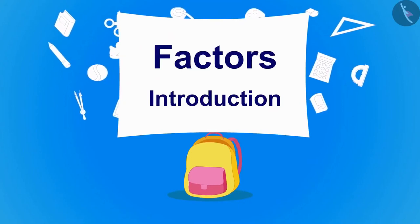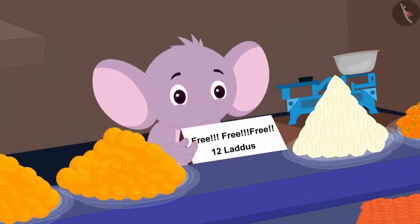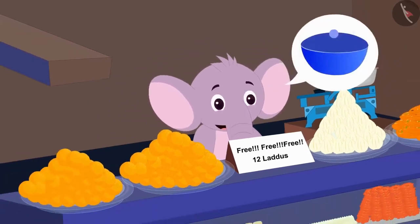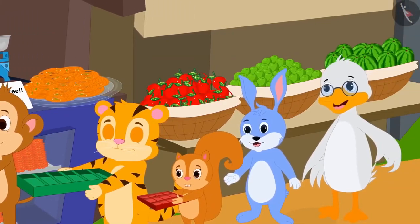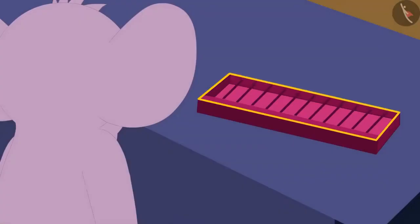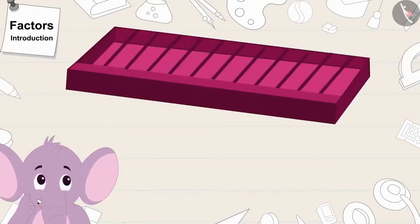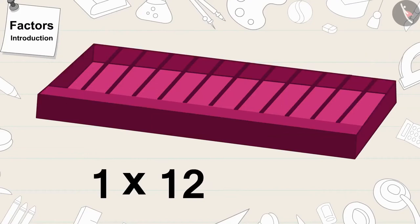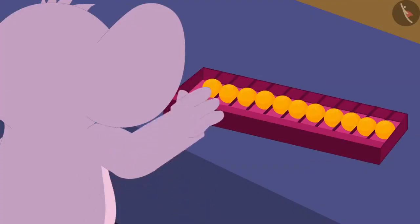In this video, we will learn about what are factors. Appu has decided to distribute 12 laddus to all the villagers for free today. Appu has asked all the villagers to bring boxes to carry their laddus. The next day, a long queue was formed in front of Appu's shop. Babban first gave his box to Appu. There are 12 slots in a line in Babban's box. Appu is thinking: will 12 laddus fit in Babban's box? There is one line with 12 slots — that means 1 times 12 — so 12 laddus will surely fit. Appu filled laddus in Babban's box.